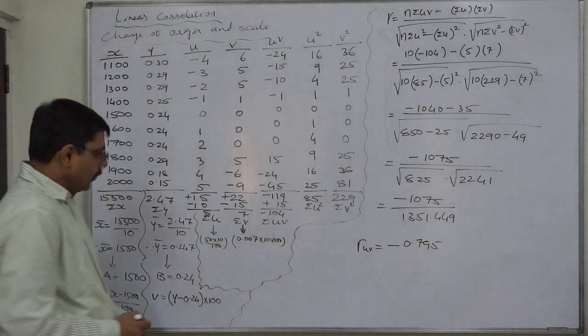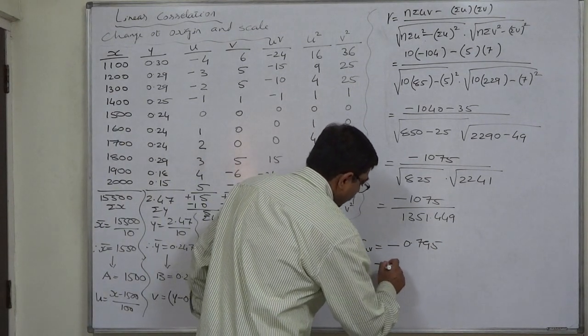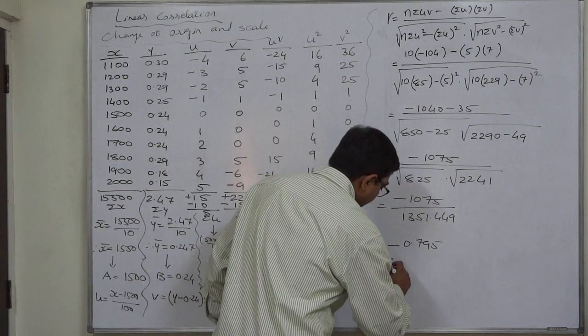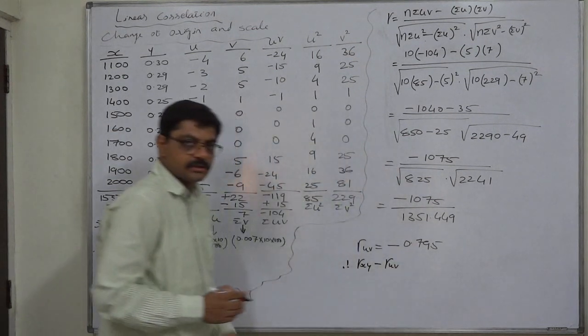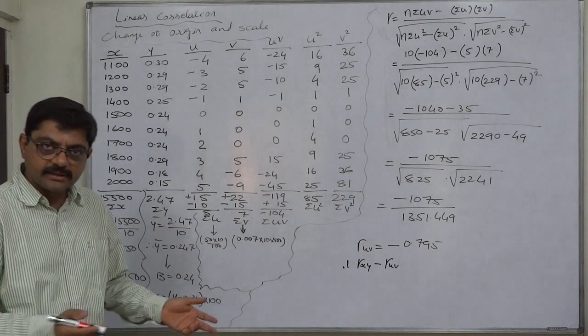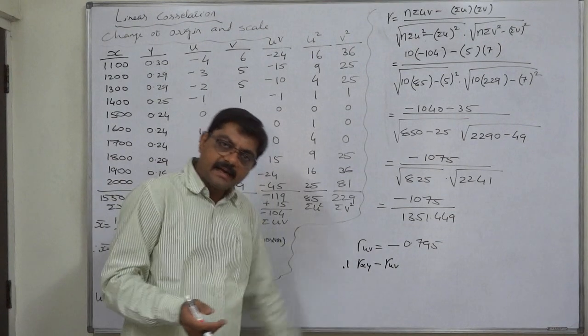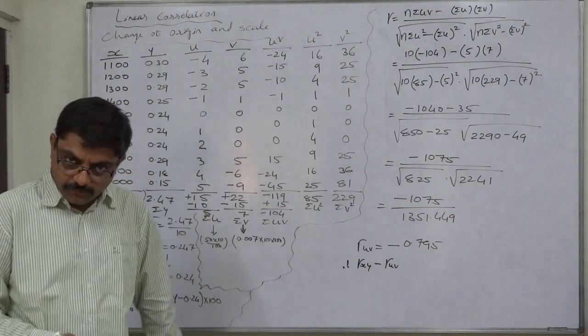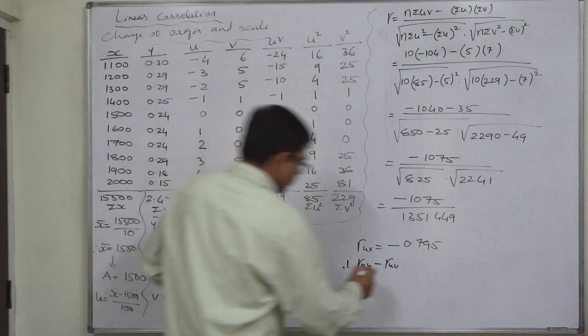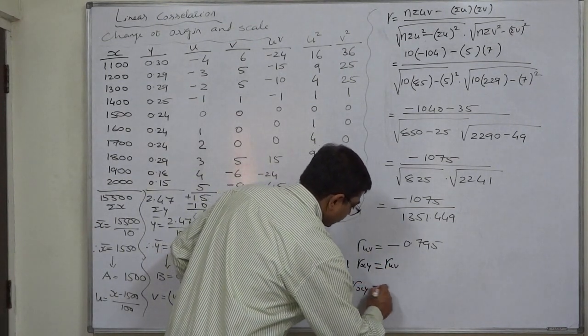So the coefficient of correlation between x and y is exactly equal to the coefficient of correlation between u and v, by virtue of the characteristic or feature that coefficient of correlation is independent of change of origin and scale. So the coefficient of correlation between x and y is also minus 0.795.